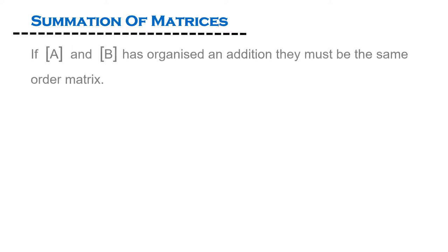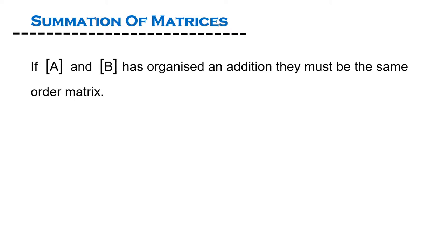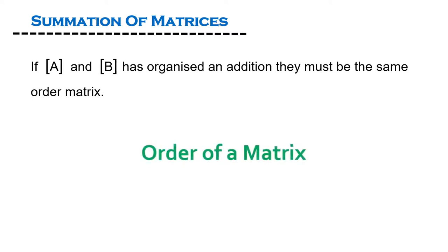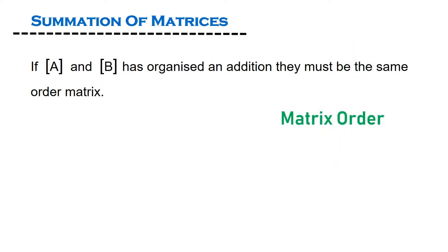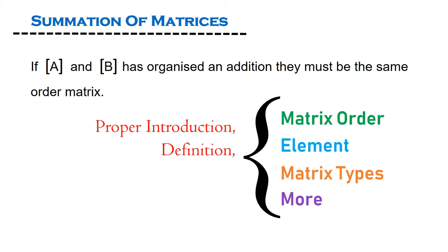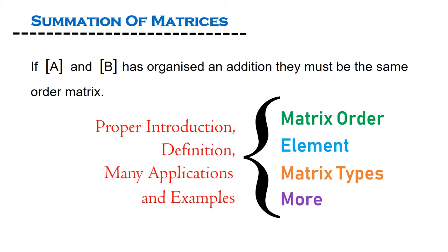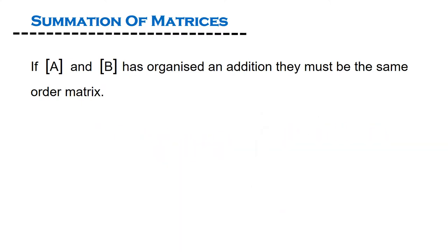First of all, we need to understand the condition under which the summation of matrices is defined. If matrix A and matrix B are to be added, they must be of the same order. If you have no idea about matrix order, pause this video and first watch Class 1, Lecture 1, on matrix and determinant, where topics like matrix order, elements, types, definitions, applications, and examples are discussed with proper introduction.